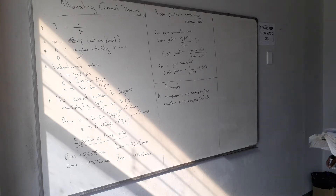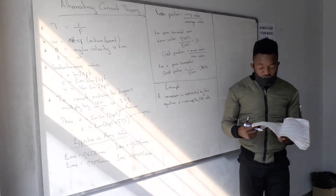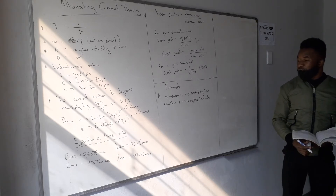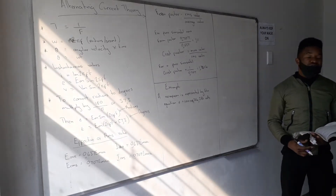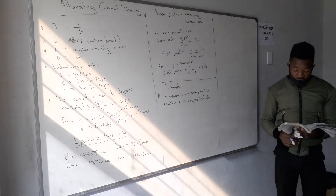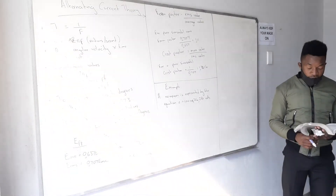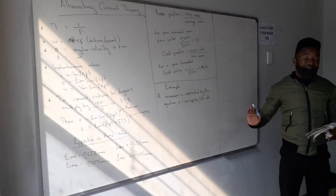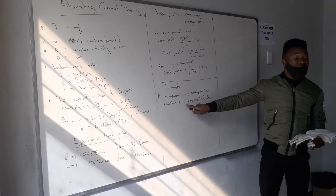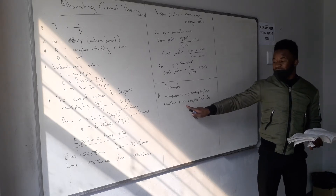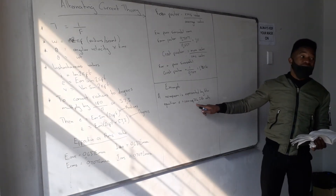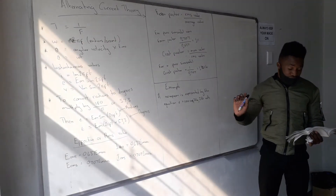Let us do Example 6.1. They say a waveform is represented by the equation e = 100 sin(314.28)t volts. Before you do anything, identify your maximum value and the angular velocity. The first value — 100 — is the maximum EMF. The value 314.28 is the angular velocity, since omega equals 2πf.